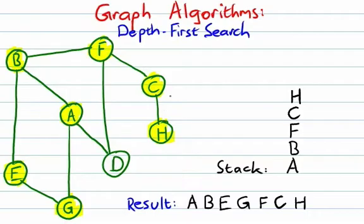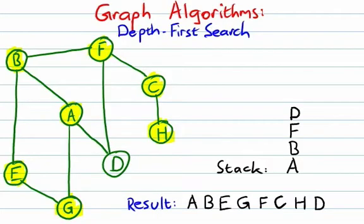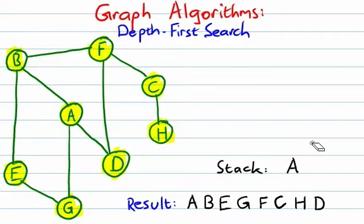From H, there's no place to go except back to C, but we've already been there, so we pop H off the stack, taking us back to C. There's no place new to go from C, so we pop it off, taking us back to F. From F, there's a connection to D, which we haven't visited yet, so we push D, visit it, and mark it as visited. But at D there's no place new to go, so we pop it off back to F. From F we've been everywhere, so we pop it back to B. From B there's no place new to go, so we pop back to A. Since we've seen everything connected to A, A gets popped off the stack as well.